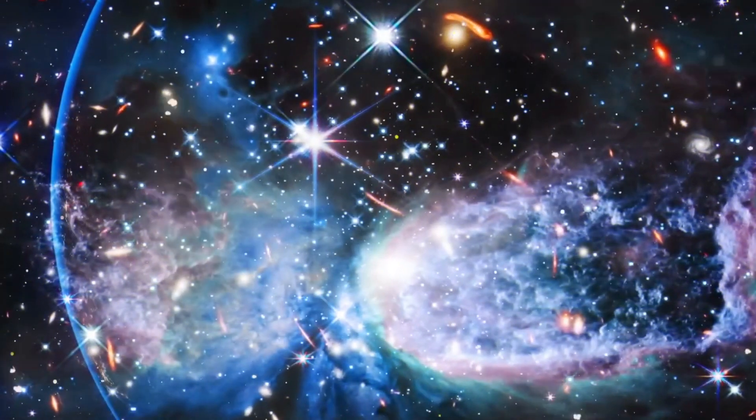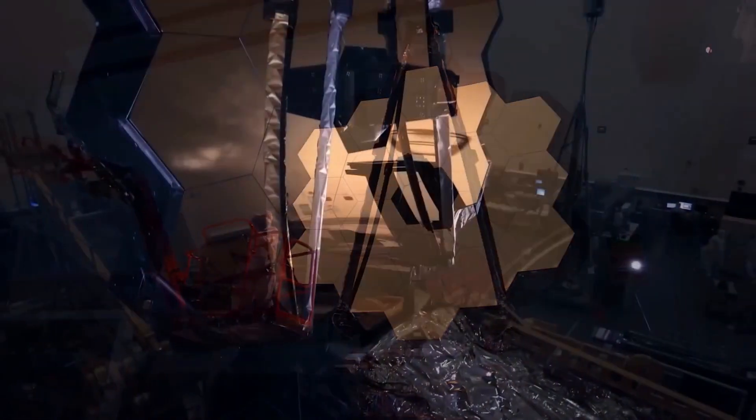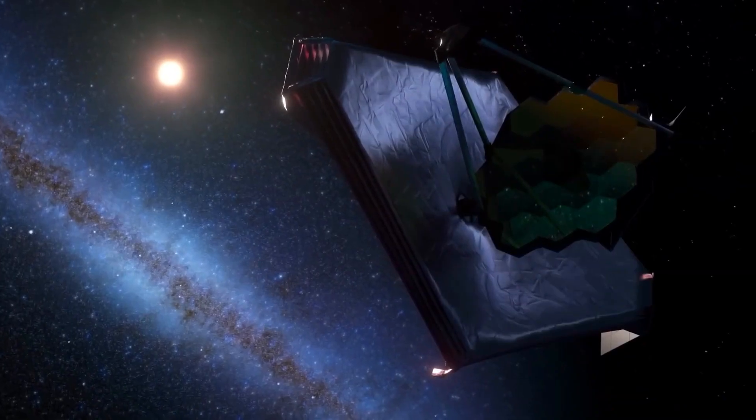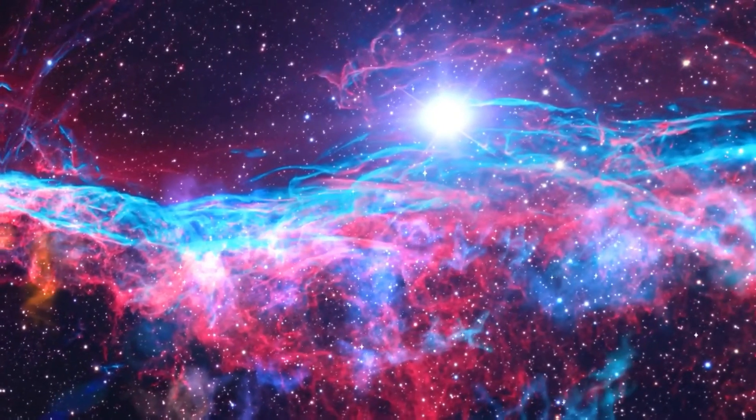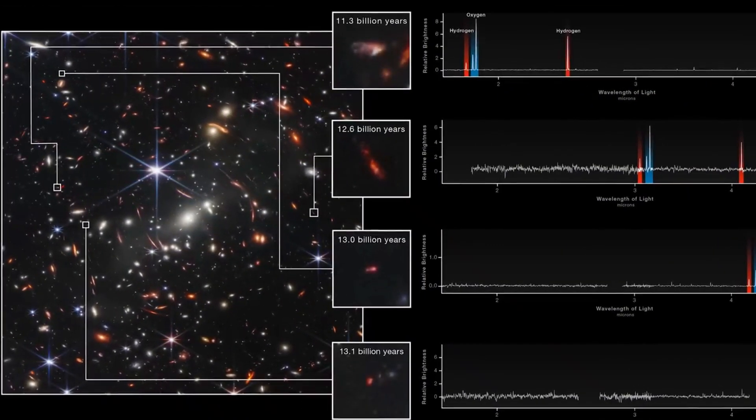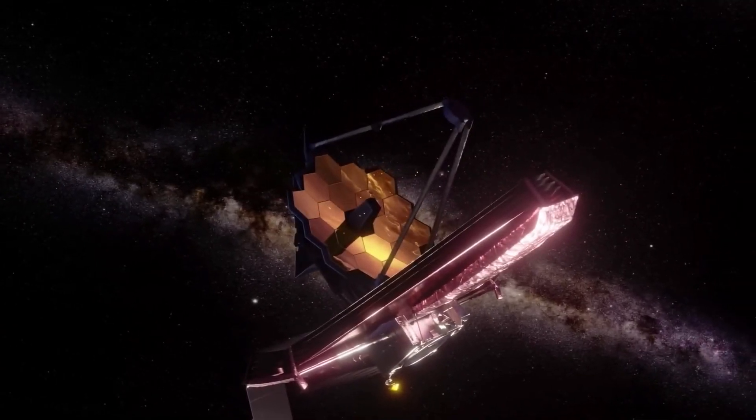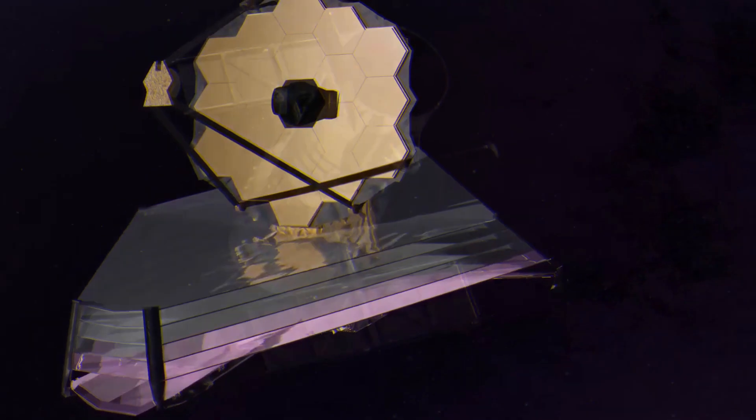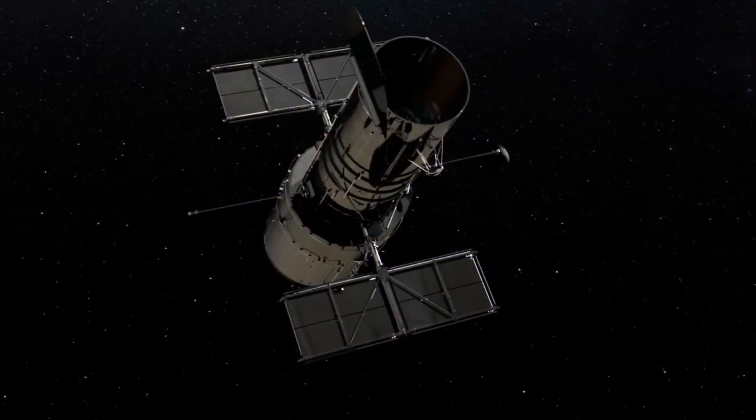The stunning pictures revealed to us are all possible thanks to Webb's superior infrared vision. In the past, infrared has uncovered a multitude of previously unknown intricacies in the structures we've observed. Unlike optical light, which cannot pass through dust, infrared light can, enabling the James Webb Space Telescope to view into areas of space that are otherwise inaccessible to instruments like Hubble's.